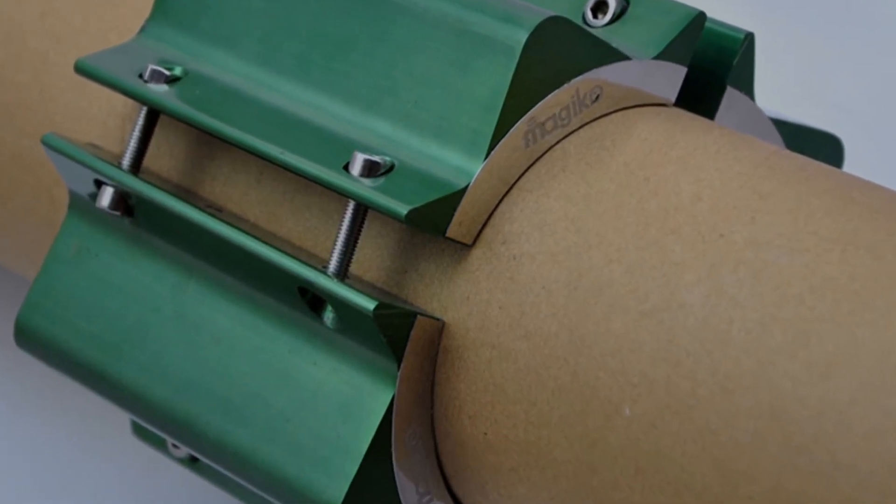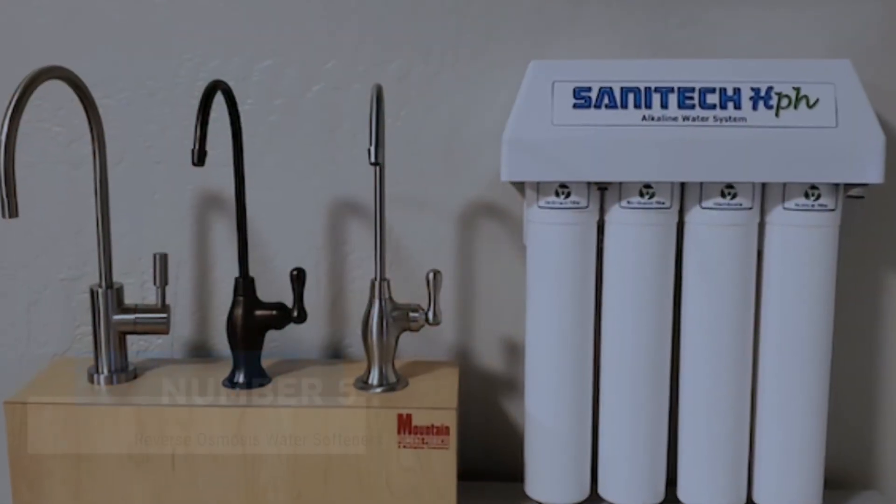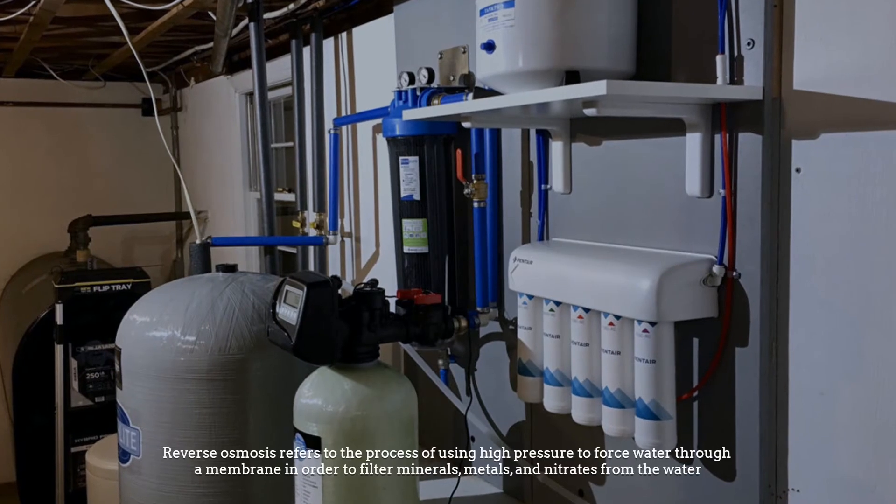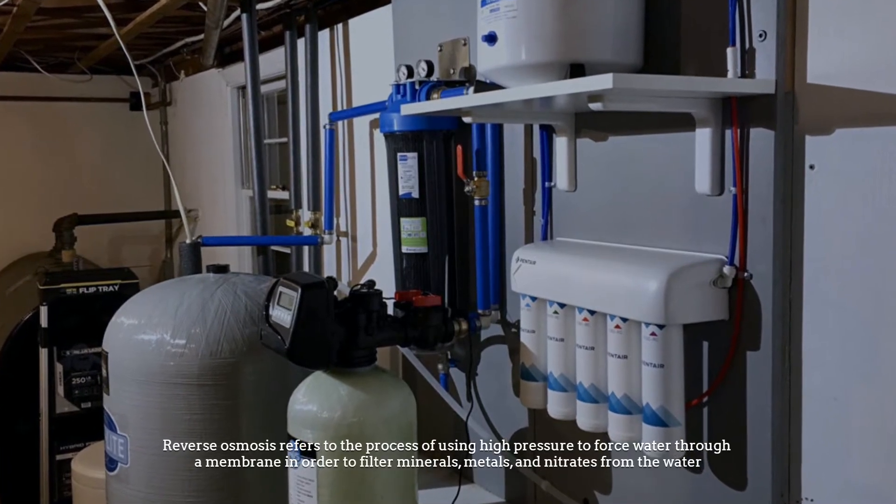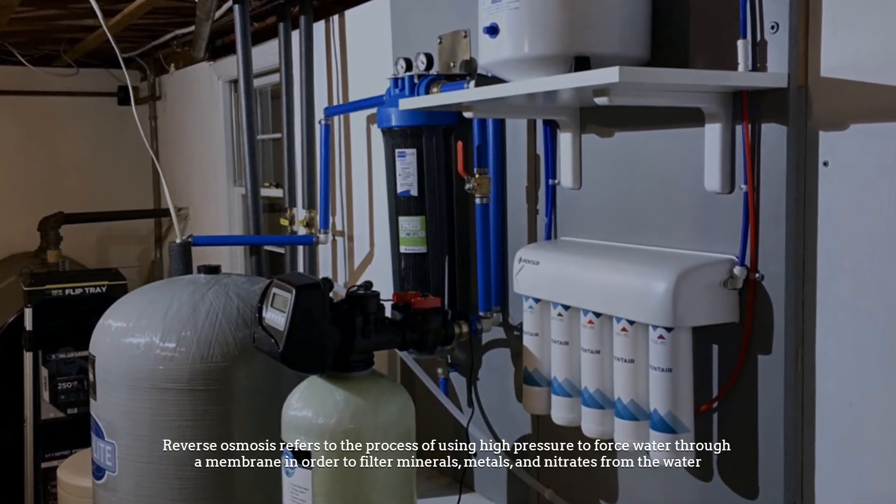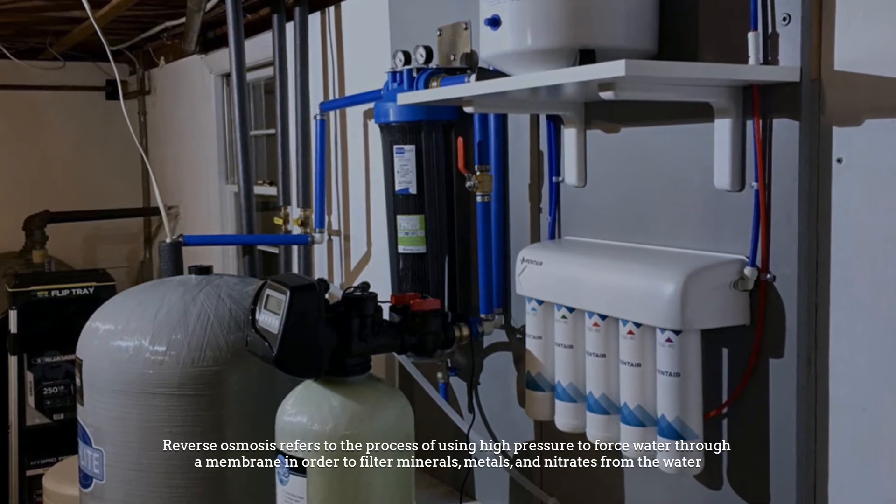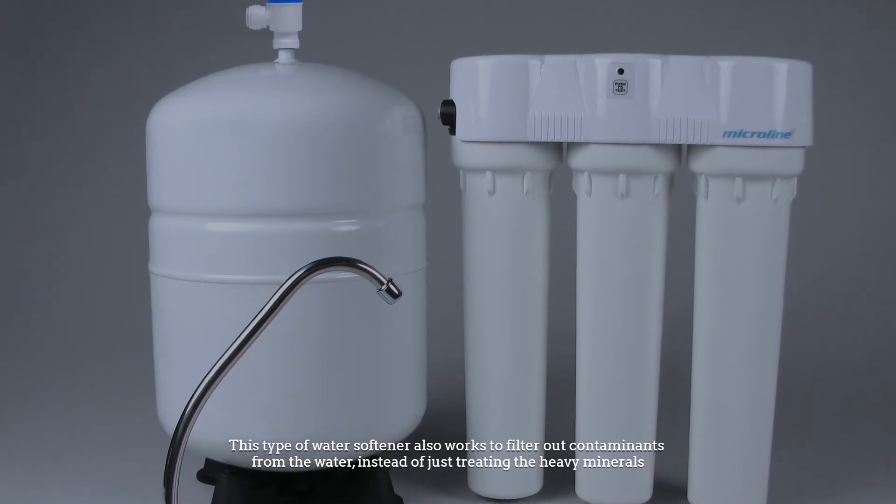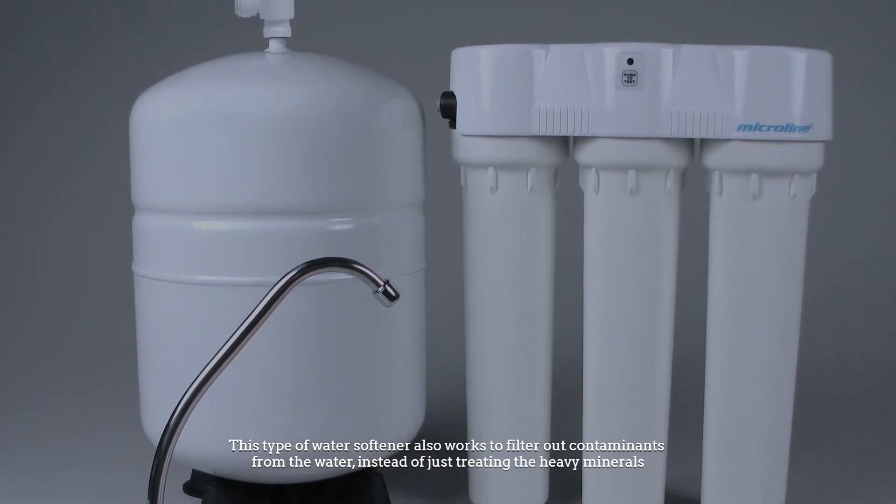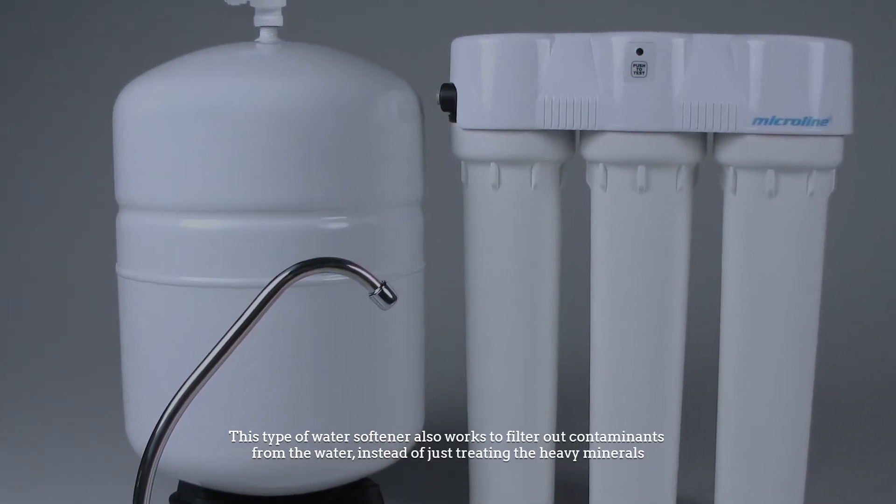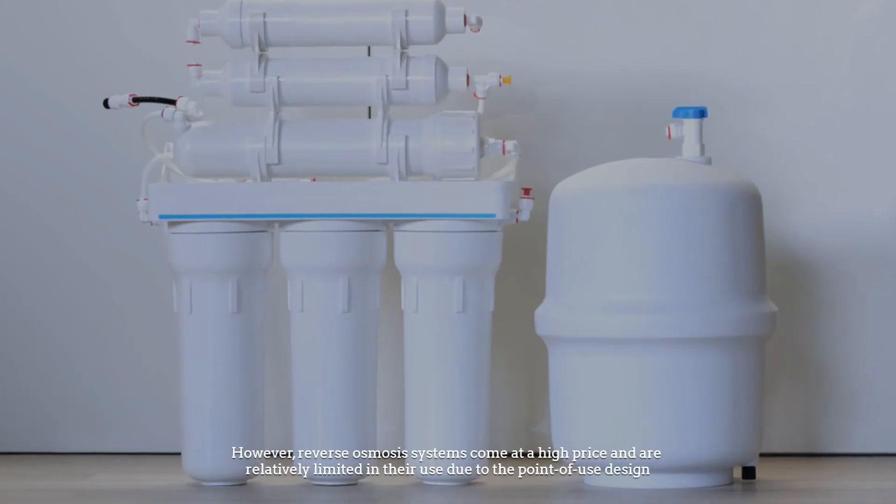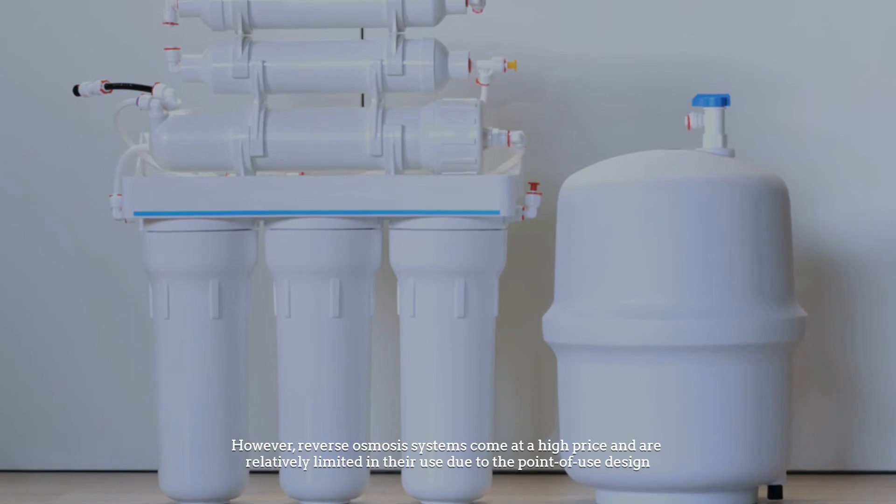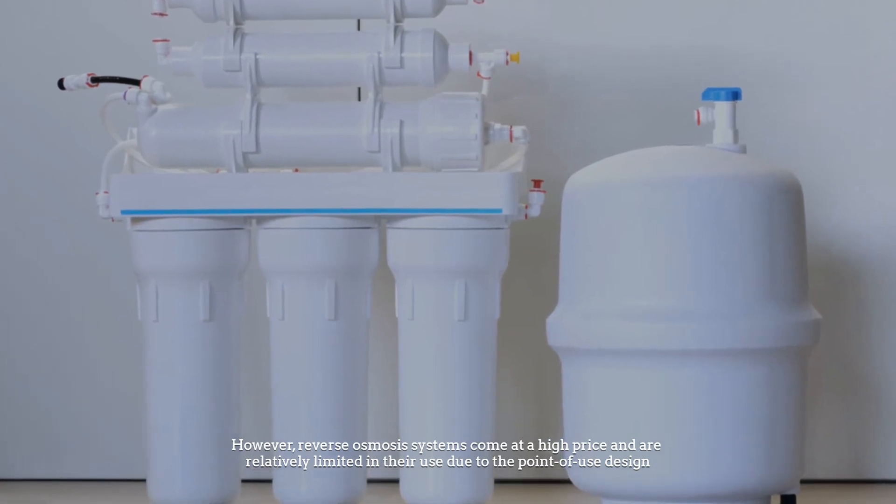Number five: reverse osmosis water softeners. Reverse osmosis refers to the process of using high pressure to force water through a semipermeable membrane in order to filter minerals, metals, and nitrates from the water. This type of water softener also works to filter out contaminants from the water instead of just treating the heavy minerals. However, reverse osmosis systems come at a high price and are relatively limited in their use due to the point-of-use design.